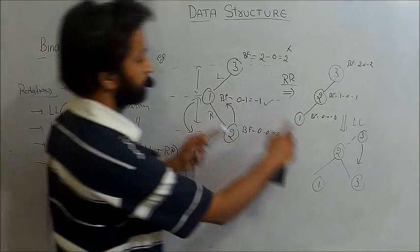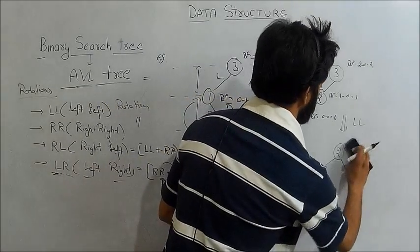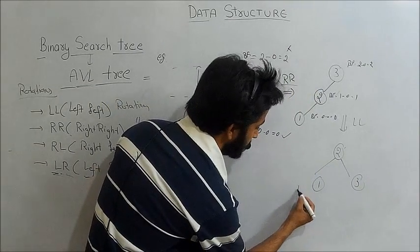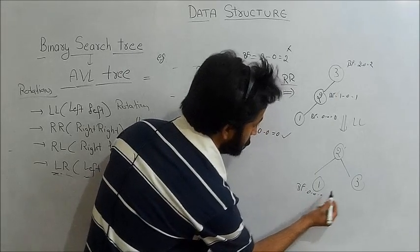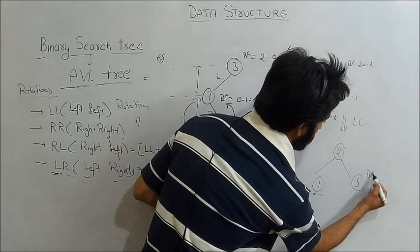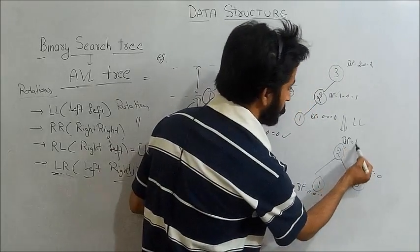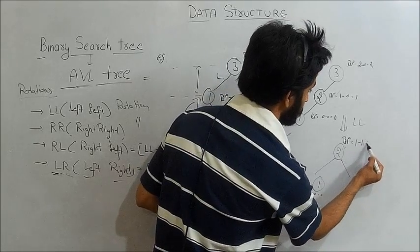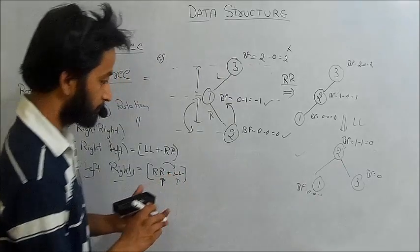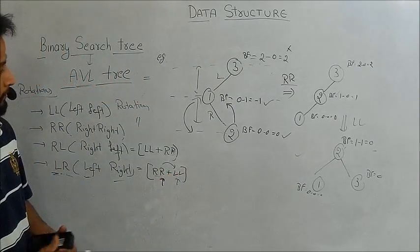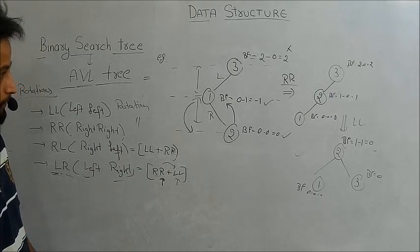After applying LR rotation, we check the balance factor. Here BF is zero minus zero which is zero, BF here is also zero, and at the root the balance factor is one minus one which is zero. So the tree is balanced and it is an AVL tree.